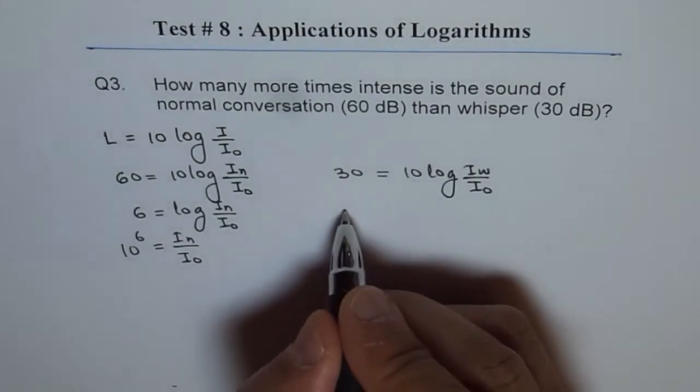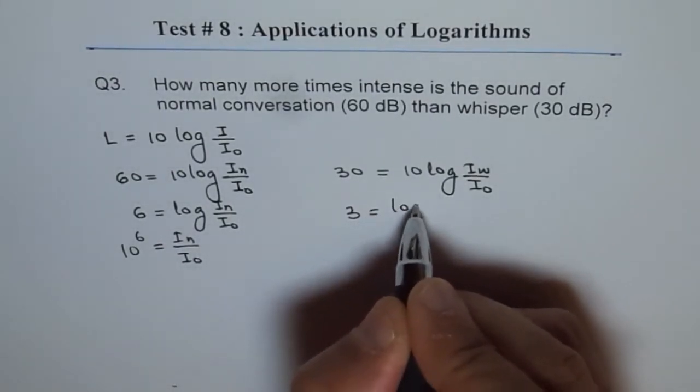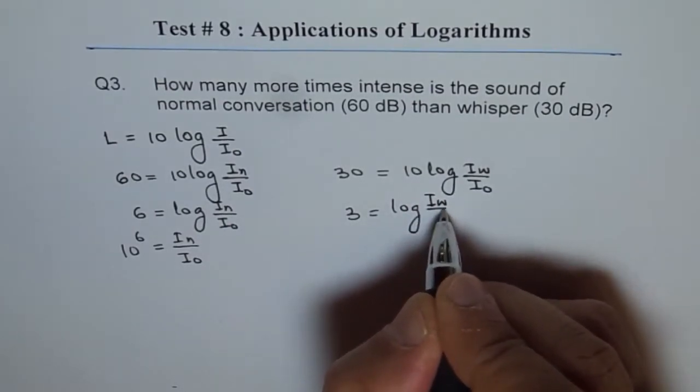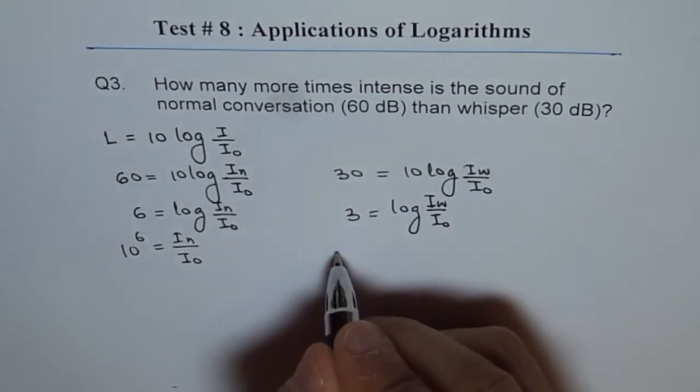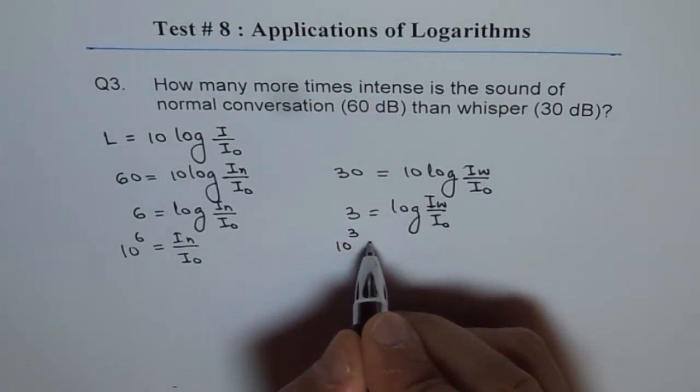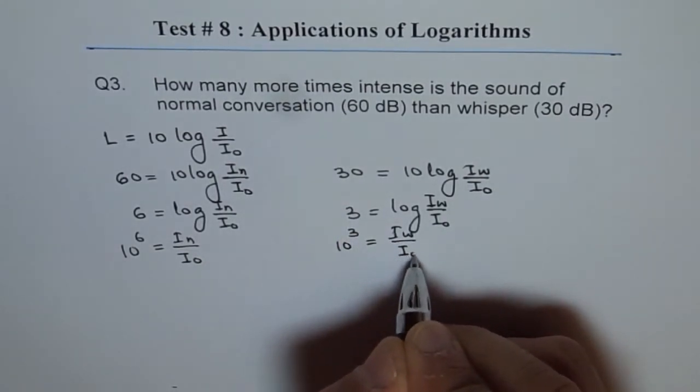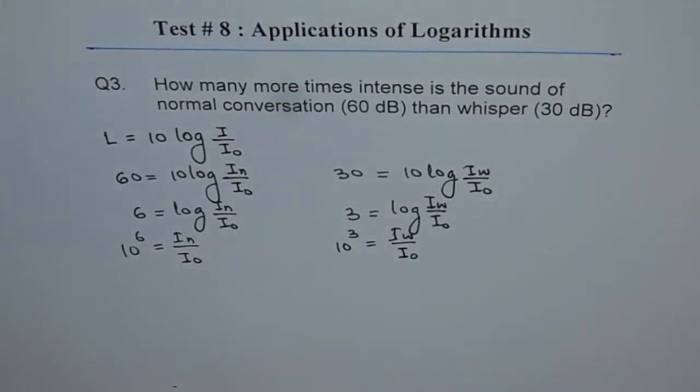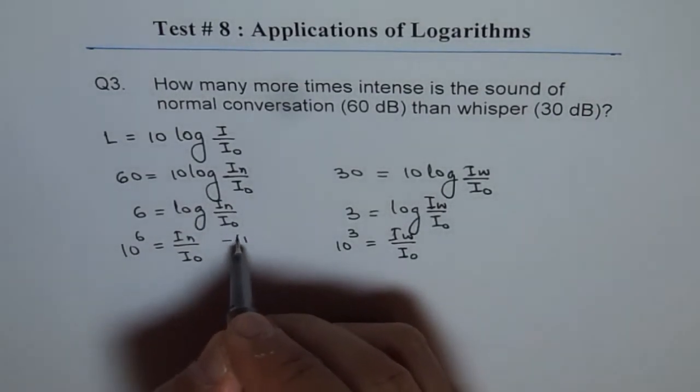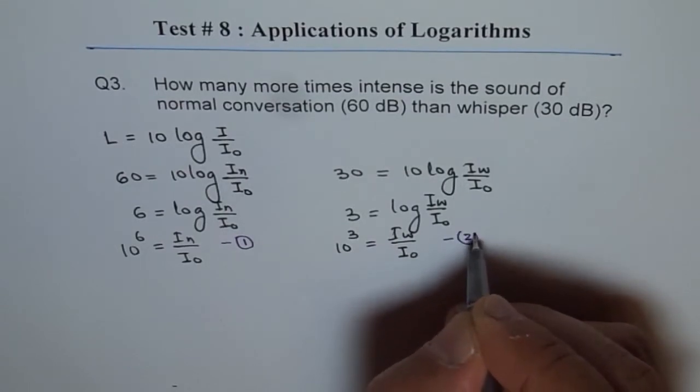Here, if we do the same thing, we get 3 equals log of I whisper over I0. So let us call this as equation 1, and this as equation 2.